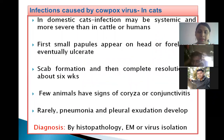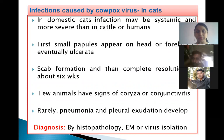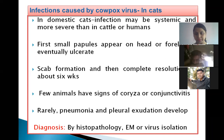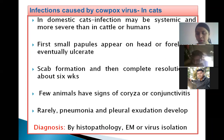In cats, small papules appear on the head or forelimb that eventually ulcerate and cause lesions. These ulcerated lesions dry and form scab formation, with complete resolution occurring in about 6 weeks. Few animals may also show signs of coryza, that is flu-like or cold-like symptoms, or conjunctivitis. Sometimes it also causes pneumonia and pleural effusion in cats. Diagnosis can be done by histopathology, electron microscopy, or virus isolation.